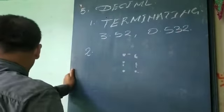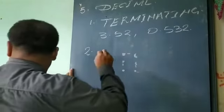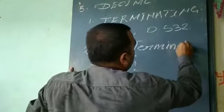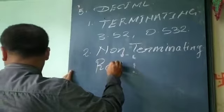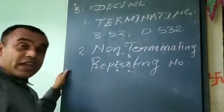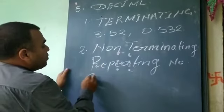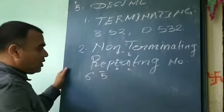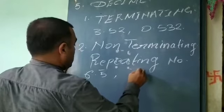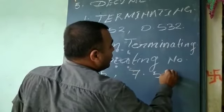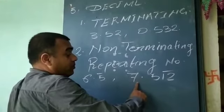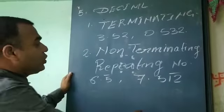The second type is non-terminating repeating decimal numbers, which are also rational numbers. For example, 6.5 repeating — this is non-terminating but repeating, so it is also a rational number.